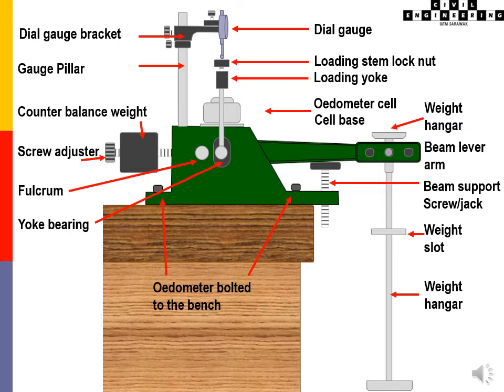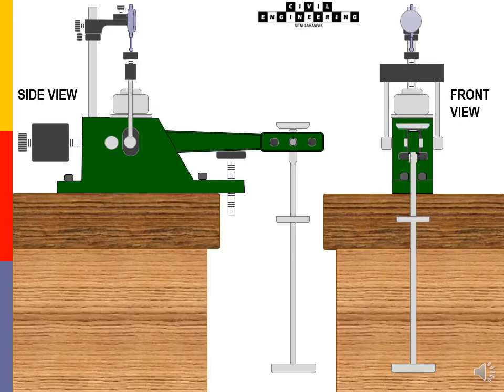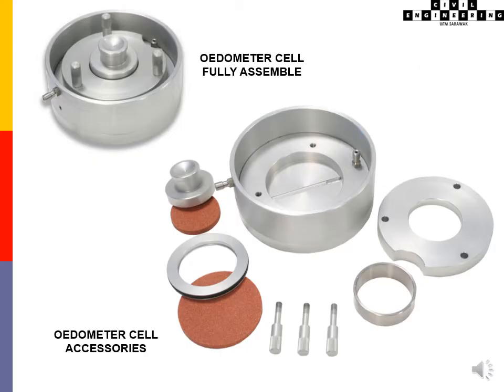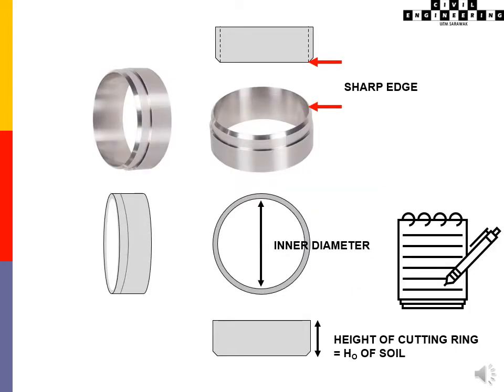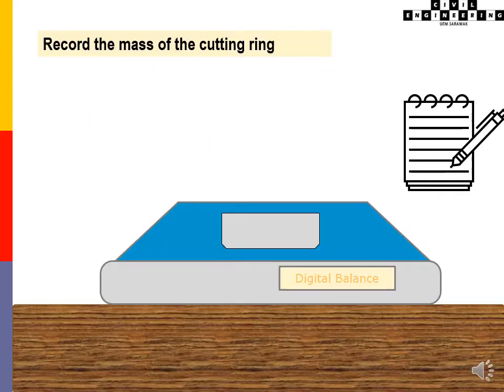Odometer rig. A fully assembled odometer cell and its accessories. Get the accurate measurement of the inner diameter and the thickness of the cutting ring. Record the mass of the cutting ring.